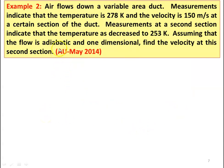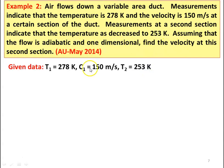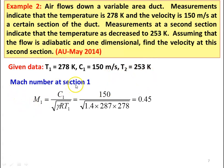Example number 2, from May 2014 question paper. Air flows down a variable area duct. Measurements indicate that temperature is 278 Kelvin and velocity is 150 meters per second at a certain section of the duct. Measurements at the second section indicate that the temperature decreased to 253 Kelvin. Assuming adiabatic, one-dimensional flow, find the velocity at the second section. We are given T1 equal to 278 Kelvin, C1 equal to 150 meters per second, and T2 equal to 253 Kelvin. Mach number at section 1: M1 equal to C1 divided by square root of gamma R T1, which is 150 divided by square root of 1.4 into 287 into 278, equal to 0.45.